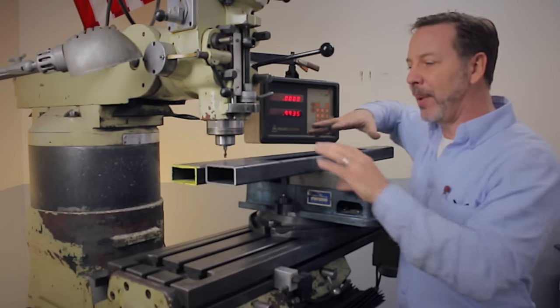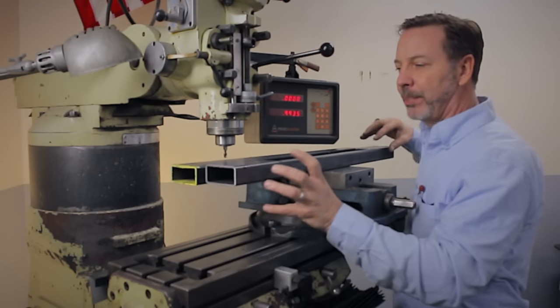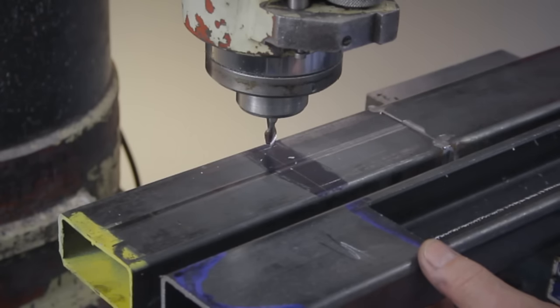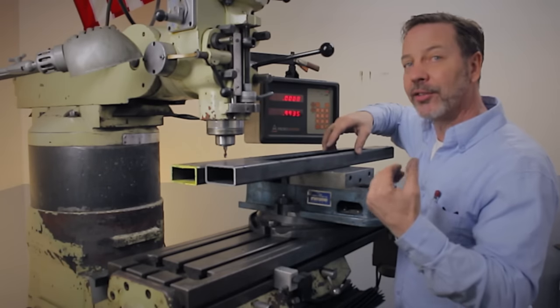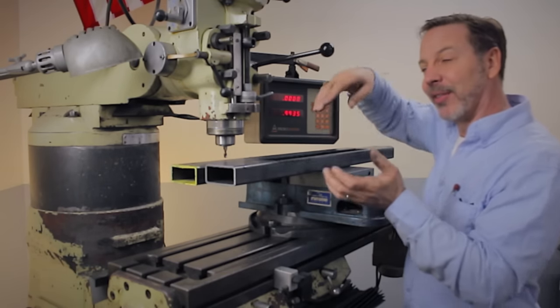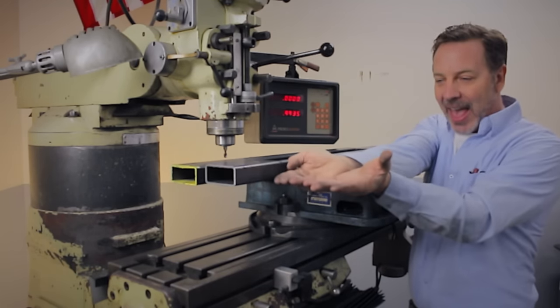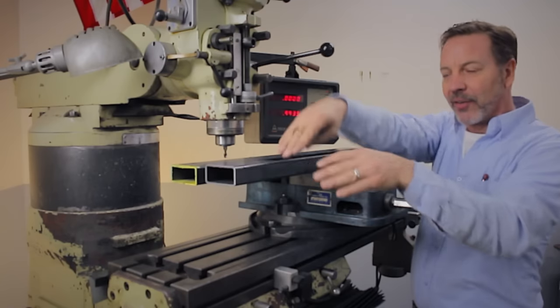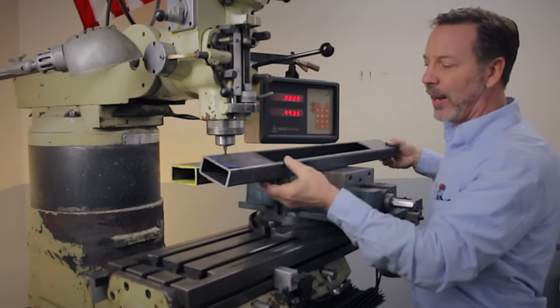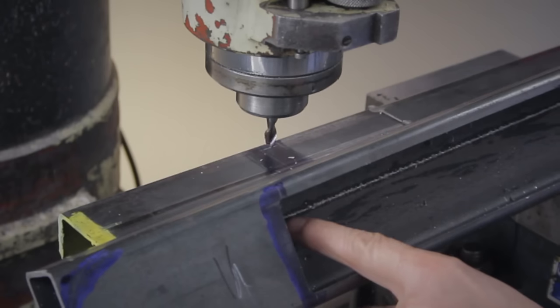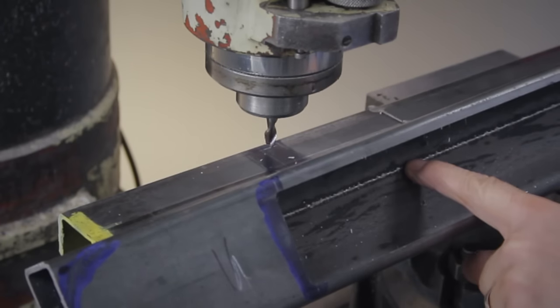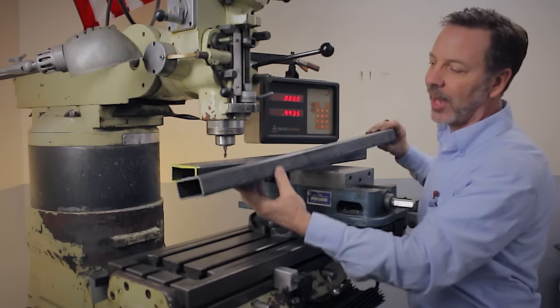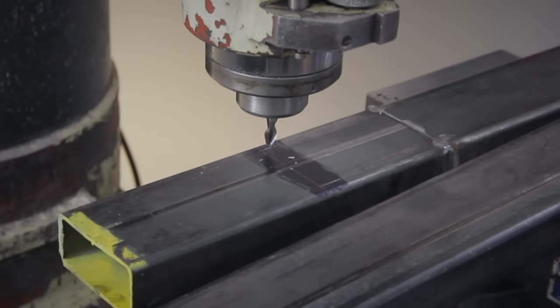Now what we need to be aware of is the manufacturing process of making square tubing like this. Round tubing is very similar. They start out with flat material and then they bend and bring it around and weld it. Here you can actually see inside the welded seam, and on the backside you see it as just a discoloration or a line.